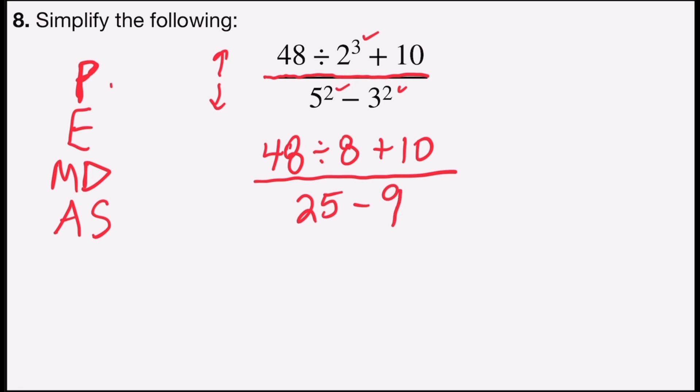Now I'm going to move on to multiplication and division. In the numerator, I have 48 divided by 8, which is 6, and so my numerator will have 6 plus 10.